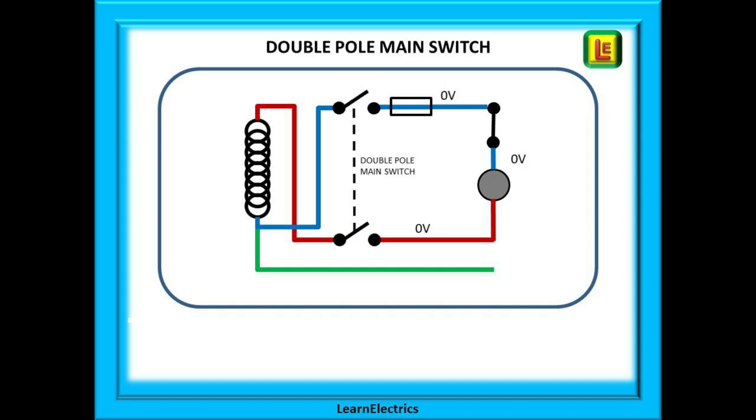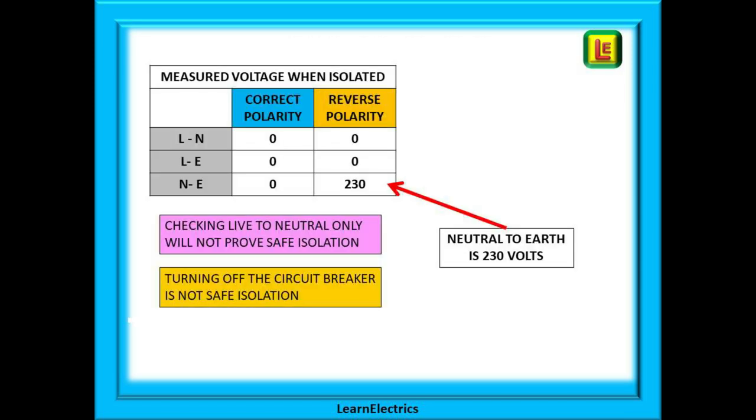But look, if we make the main switch a double pole device, both contacts open. Even if the property has reverse polarity, when the main switch is opened all voltage in the house is zero volts. However, most times we will be isolating just at the circuit breaker, a single pole device. When carrying out a safe isolation, it is therefore very important that we check all combinations of connections.